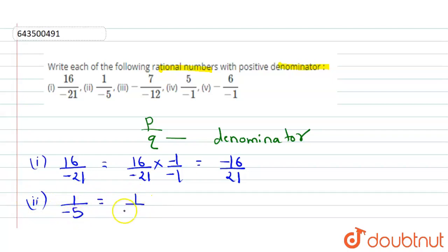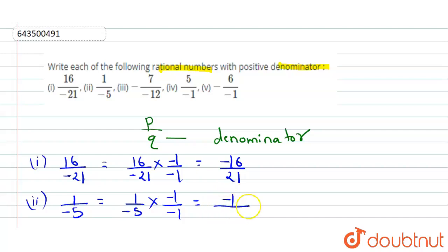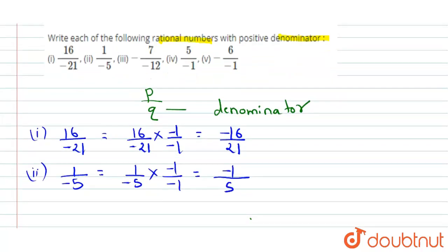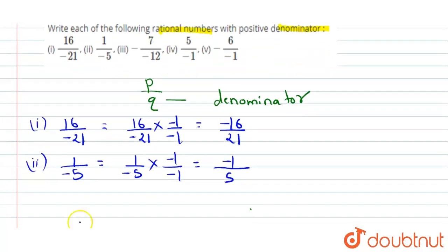The next one is 1 upon minus 5. We can write it as 1 upon minus 5 multiplied by minus 1 upon minus 1, which gives us minus 1 upon 5. Again, our denominator is converted into a positive number.